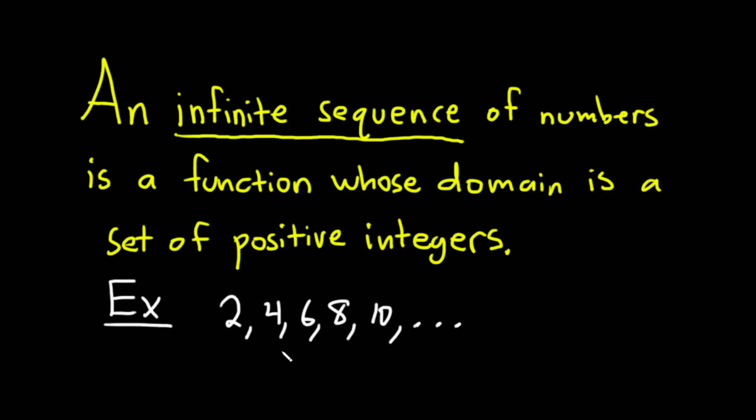And so we're saying it's a function whose domain is a set of positive integers. So what could that function look like? Maybe something like this. F of X equal to, say, 2X.